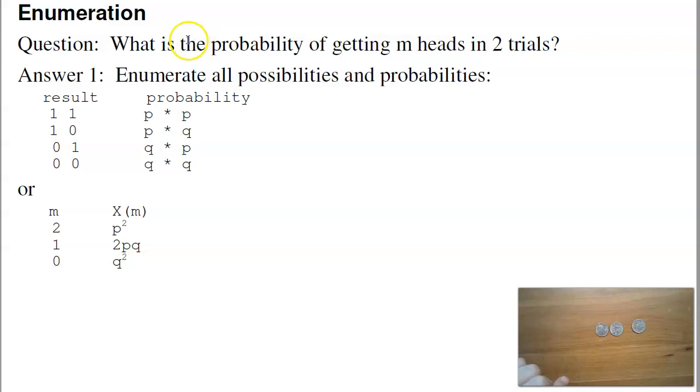A couple of ways to prove that. I can use enumeration. For example, if I want to say that I'm going to toss two coins, there's four ways I can toss two coins. I can get heads heads, heads tails, tails heads, tails tails. The probability of each is the probability of each event, p times p, p times q, q times p, q times q. Multiplication is commutative, so the probability of getting two heads is p squared, one heads is two times q times p, zero heads is q squared.